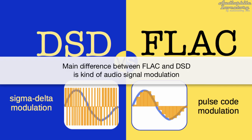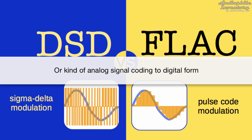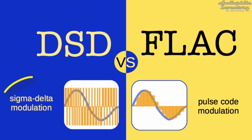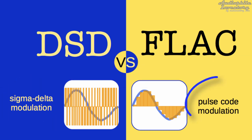The main difference between FLAC and DSD is the kind of audio signal modulation, or the kind of analog signal coding to digital form. DSD uses Sigma Delta modulation, while FLAC uses Pulse Code Modulation.